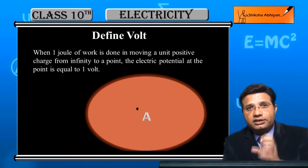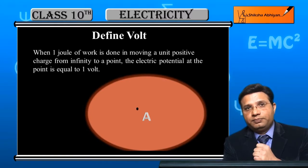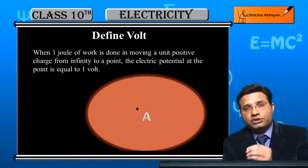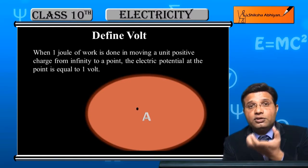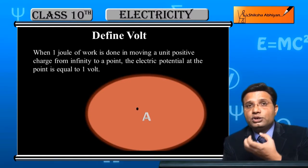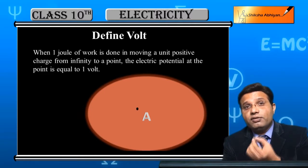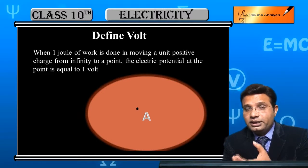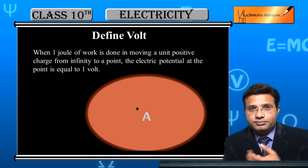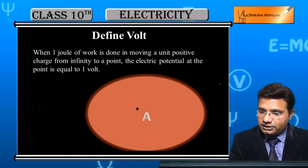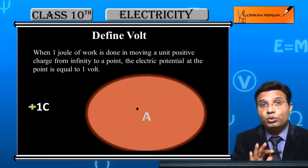That definition of electric potential — but exactly here we are saying that if the work done is 1 joule, to bring 1 unit positive charge from infinity to a point, if we did exactly 1 joule of work, then the electric potential at that point becomes 1 volt. If 2 joules, it becomes 2 volts.